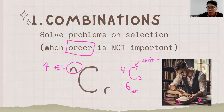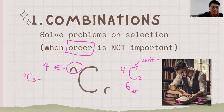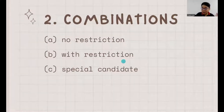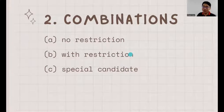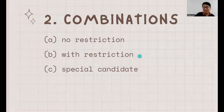How about if out of these four books I want to pick three of them? So it's 4C3, giving 4 ways to choose. Now that we know we can use NCR, we see how many types of applications we can use for combination. The first situation is non-restriction, the second is with restriction, and the last is a special candidate situation.